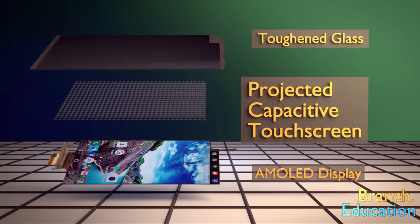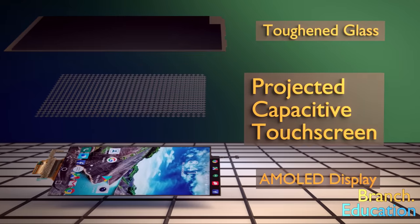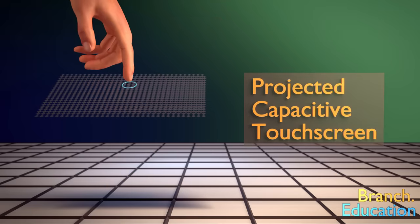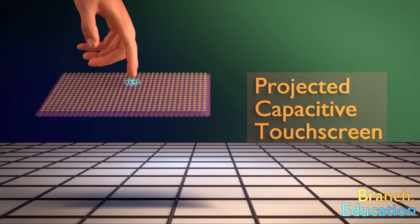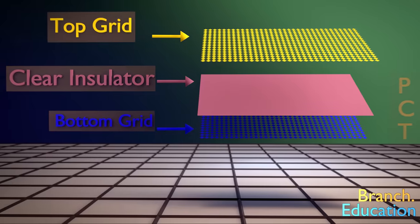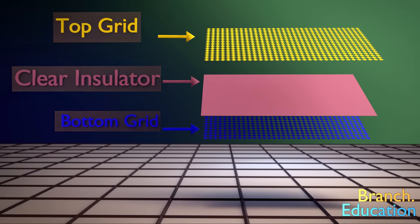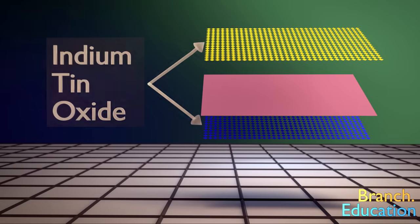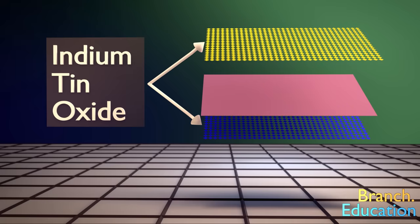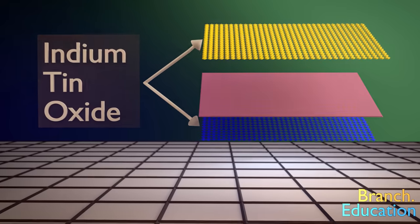Below the toughened glass is a projected capacitive touchscreen that senses the presence and location of conductive materials such as your fingertip. This touchscreen is composed of two transparent diamond grid patterns printed on polyester with an optically clear insulator in the middle. The diamond grid pattern is printed with a transparent material called indium tin oxide, or ITO, which acts as a conductor. Let's take a closer look on how it works.